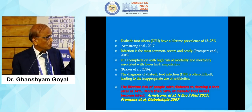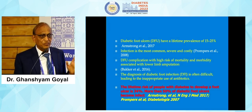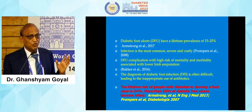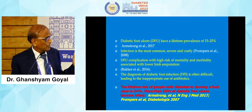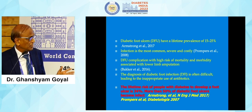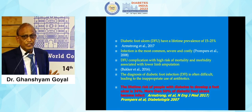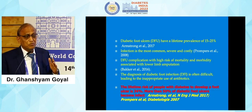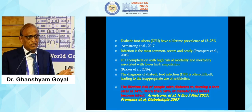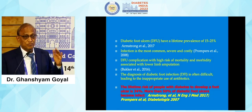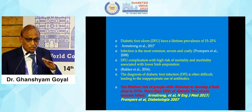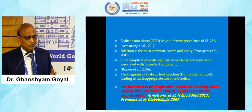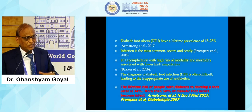Second, infection is the most common, severe, and very costly to treat. Third, DFU complications carry a high risk of mortality and morbidity associated with lower limb amputation — even more costly than the five most common cancers. And even more alarming, five-year survival is less than that of the five most common cancers.